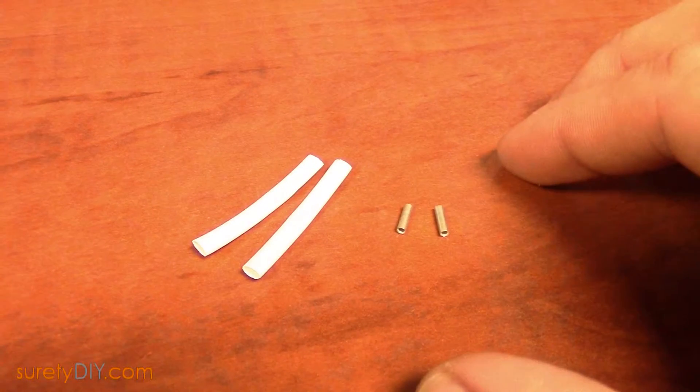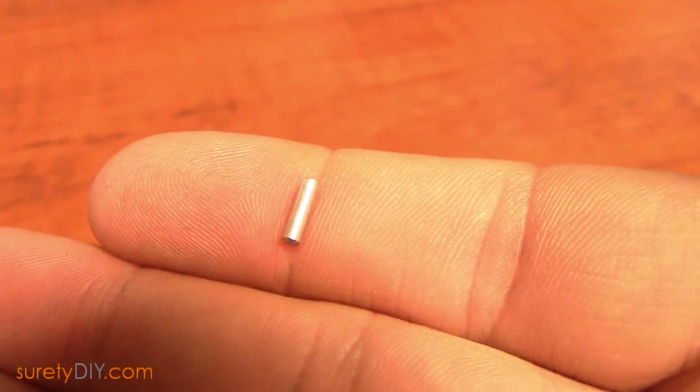For the splices, you'll want to use a compact butt connector. You can typically find these from an electronics hardware supplier.